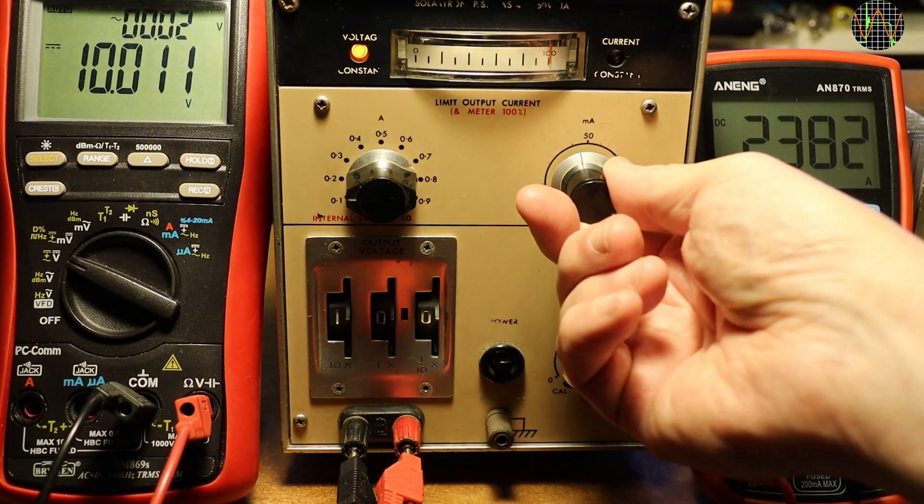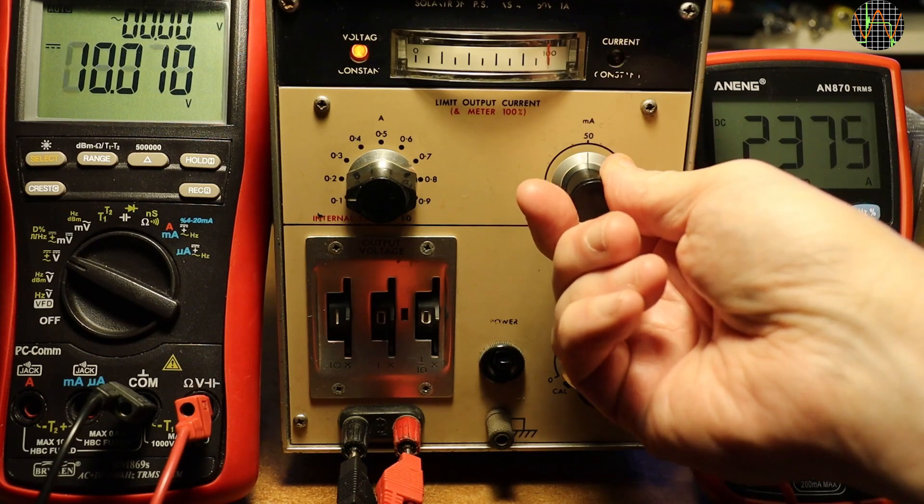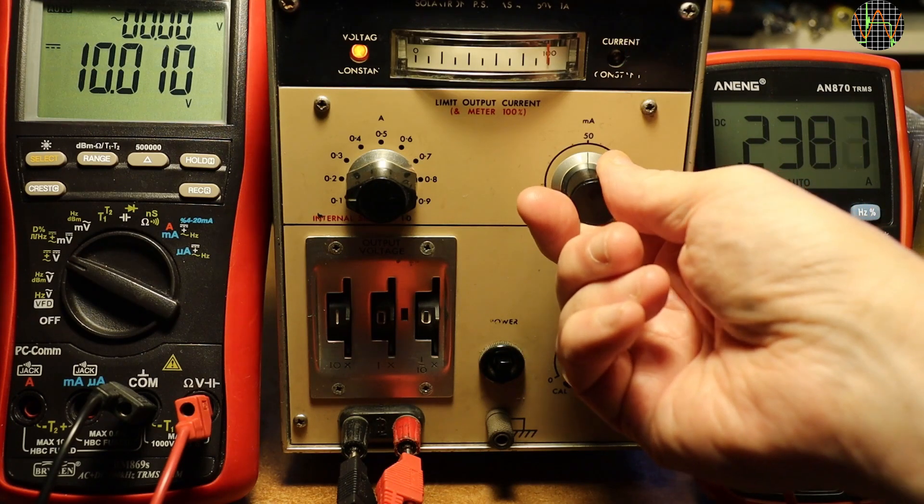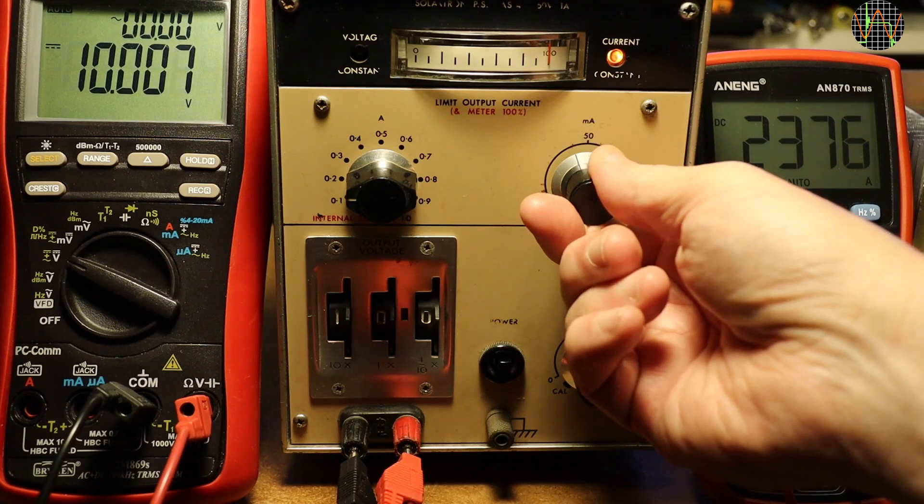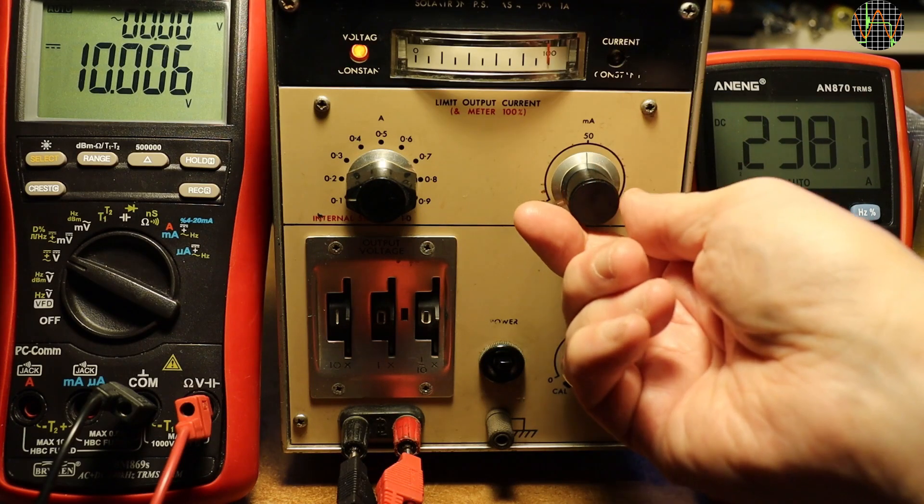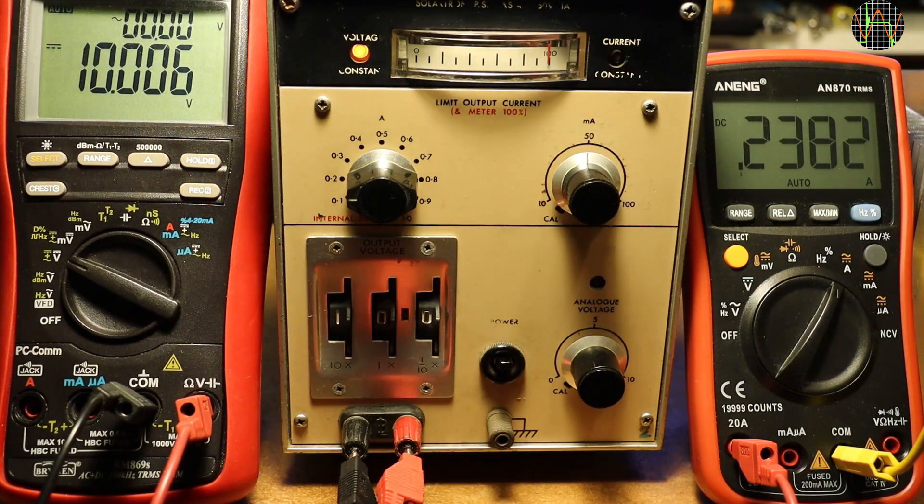You may have also heard a relay click. If you missed it, I do this transition between constant current and constant voltage a few times. This click is a relay. It switches the front panel lamps between constant current and constant voltage and a second set of contacts is available at the back. More about that in a moment.